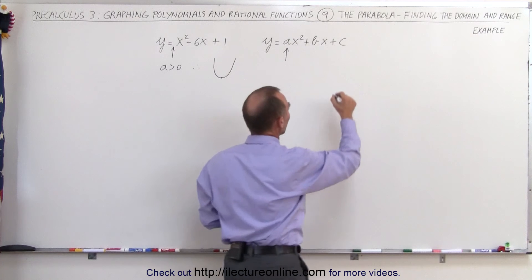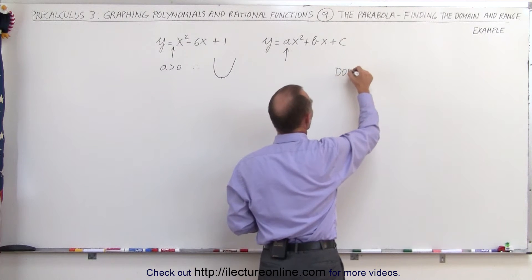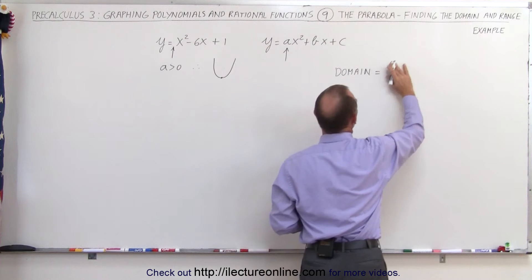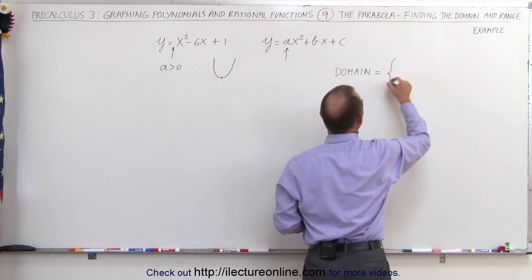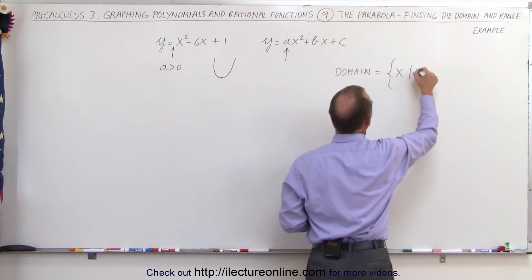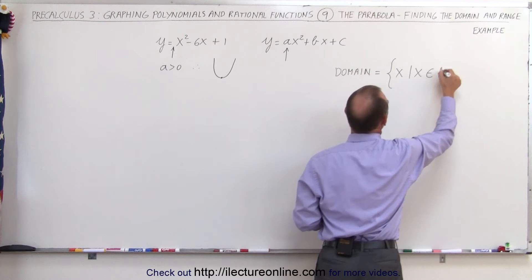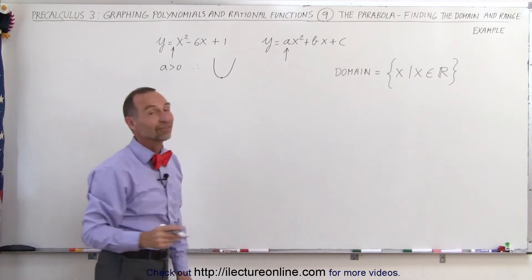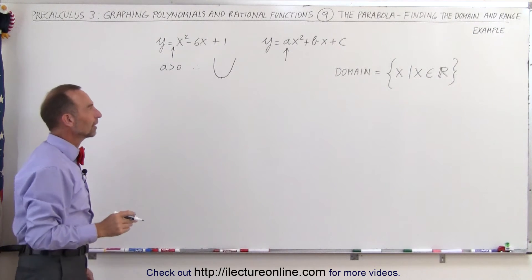Therefore, the domain, which is all possible x values, equals all x values such that x is an element of the reals. That's the domain, all possible x values.